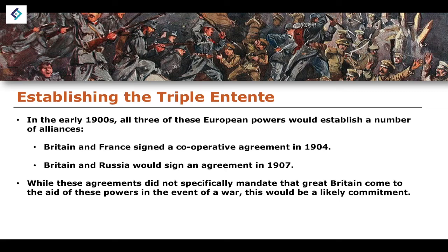In reality, the reason for Britain entering the First World War on the side of France and Russia was actually due to an ultimatum relating to Belgium. Belgium was a neutral state during the First World War, but Germany would essentially ignore Belgium's neutrality, and Britain would enter the war on that basis instead. But even if that hadn't happened, given the alliances that began to take shape in 1904 and 1907, it is incredibly likely that Britain would have eventually entered the war on the side of Russia and France at some point within 1914.